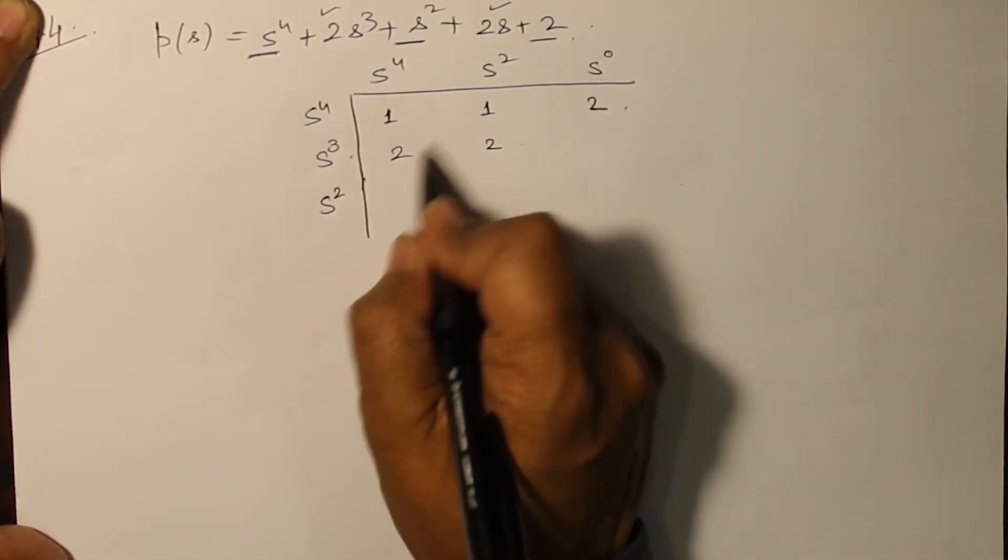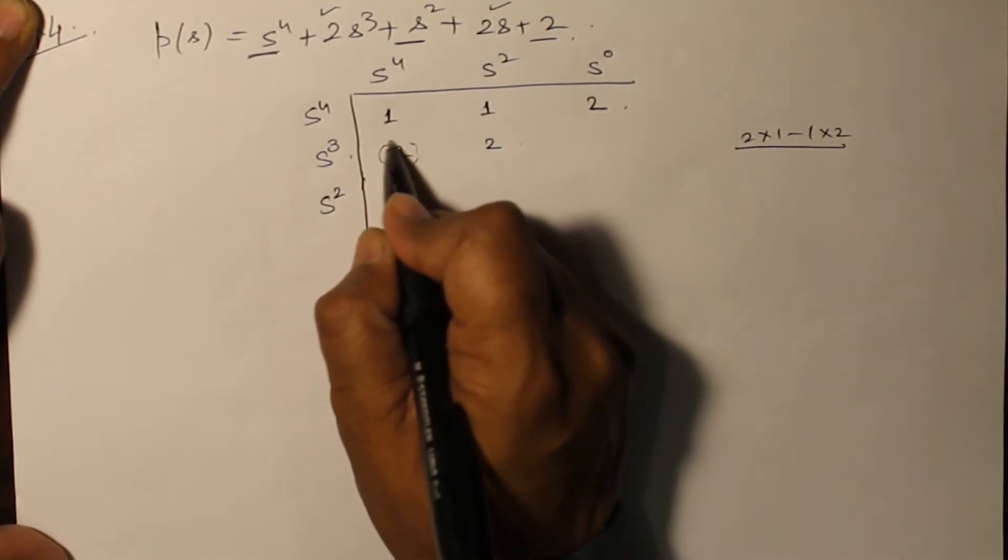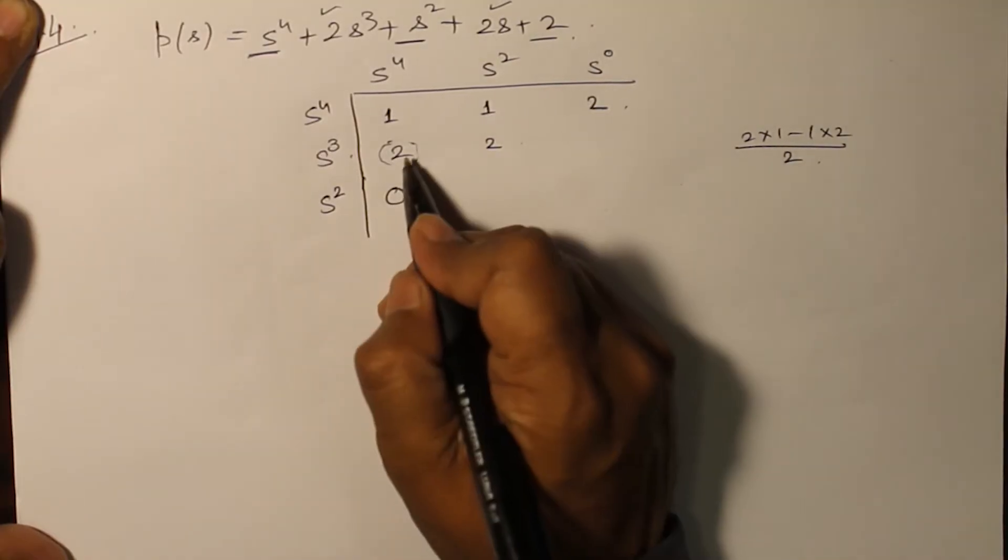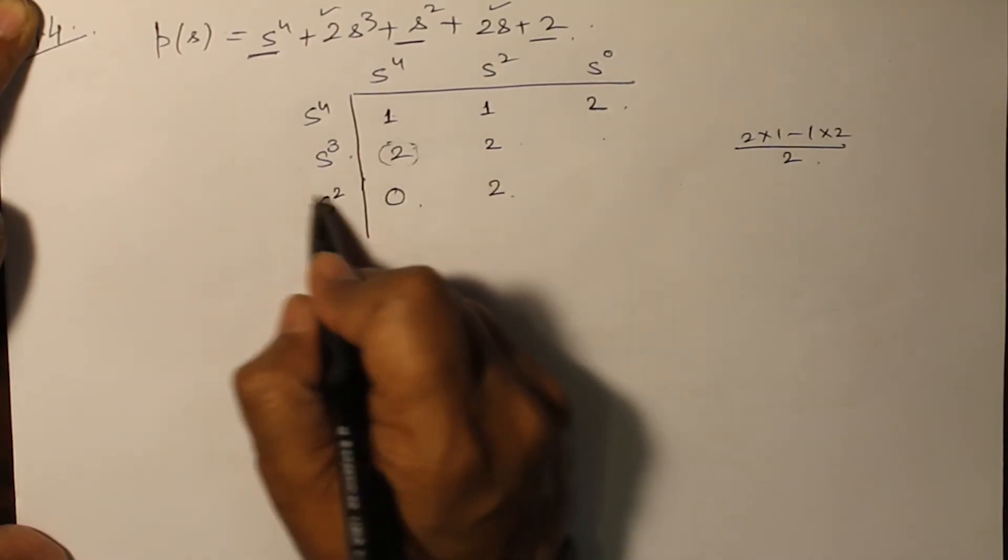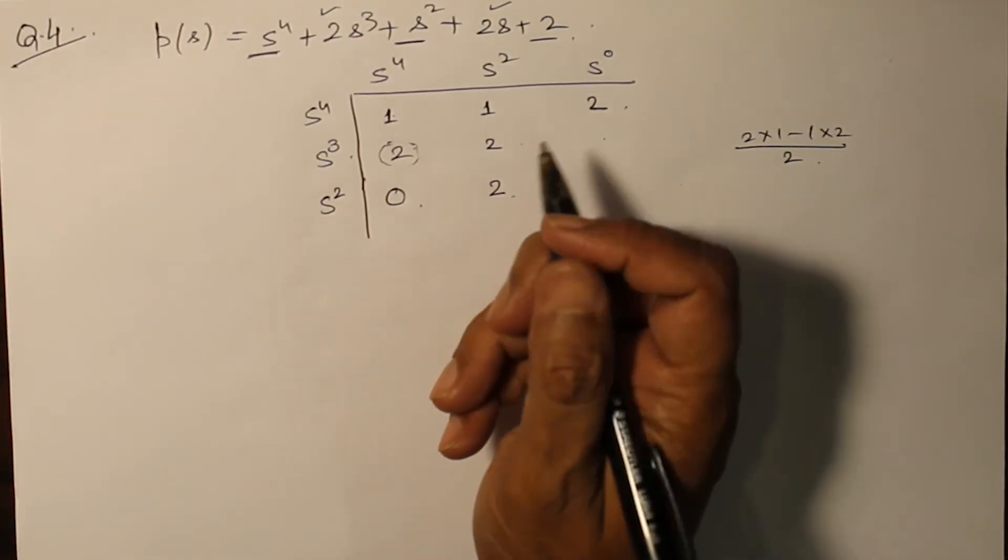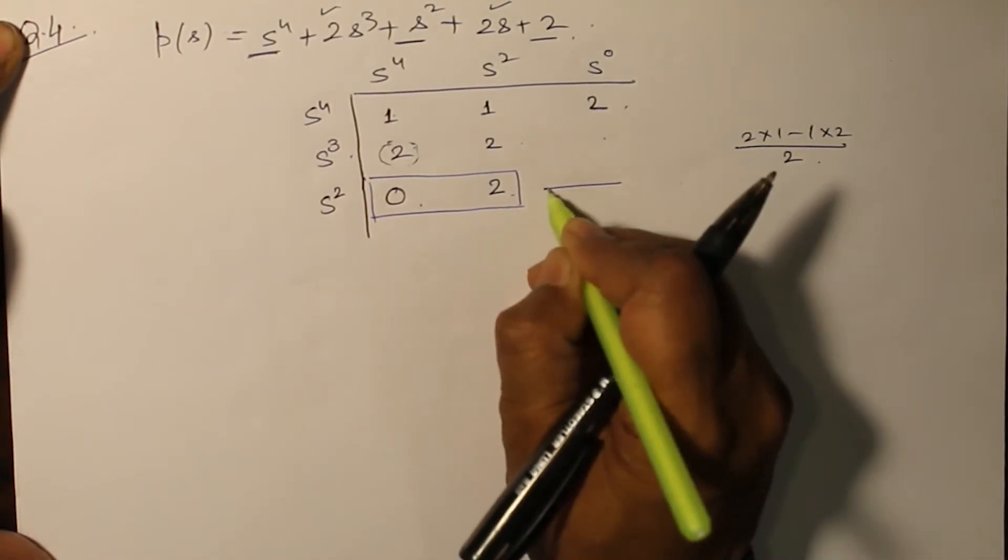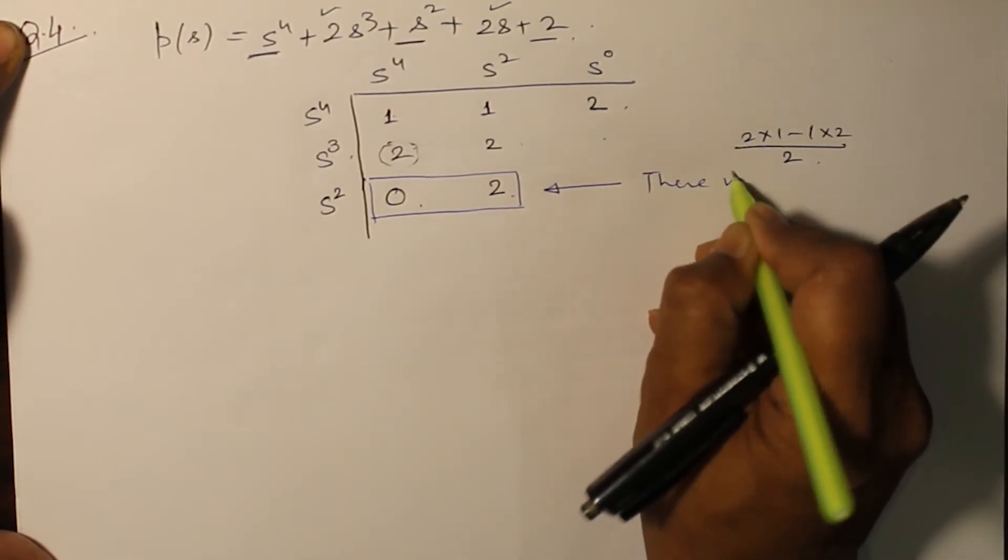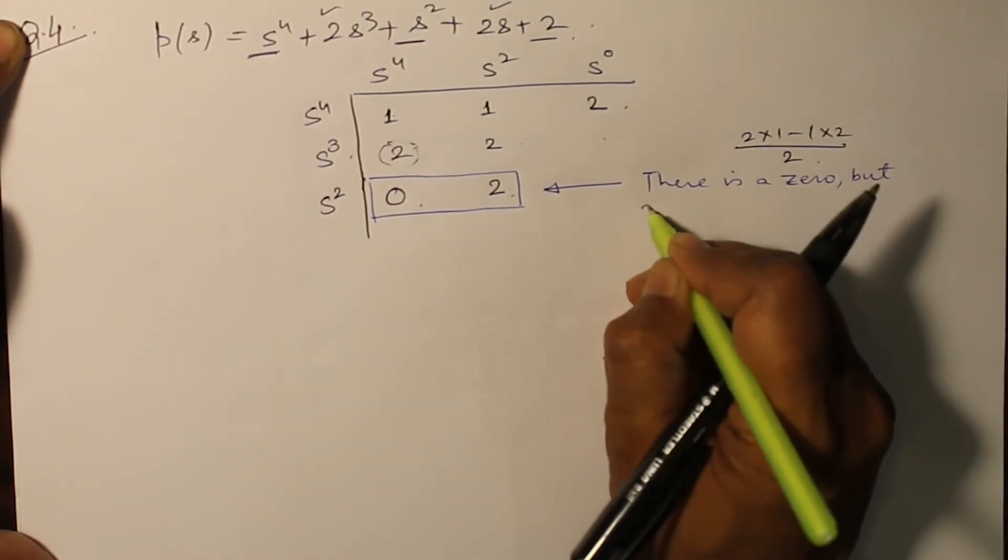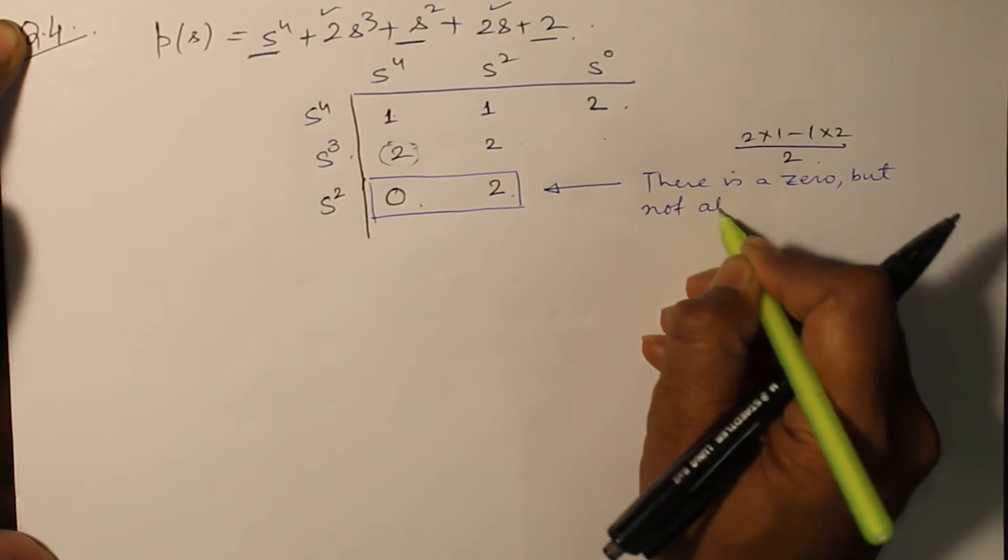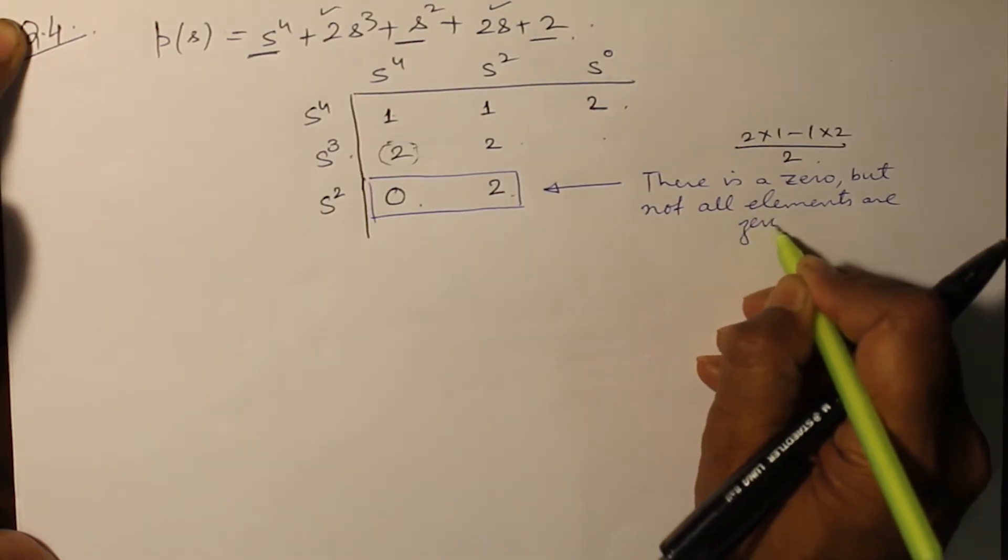For s^2: 2 into 1 minus 1 into 2 divided by 2 equals 0. Then 2 into 2 which is 4 minus 1 into 0 divided by 2, that is 2. So in this particular row there is a zero but not all elements are zero.